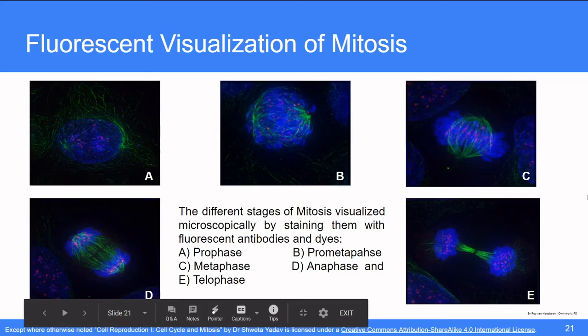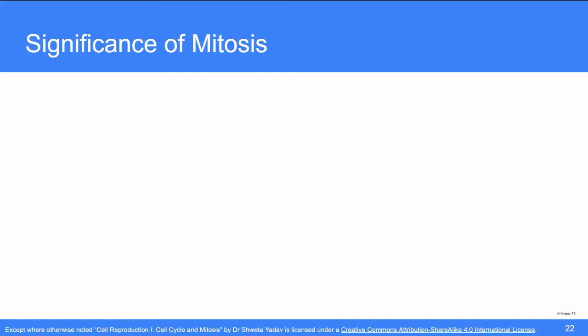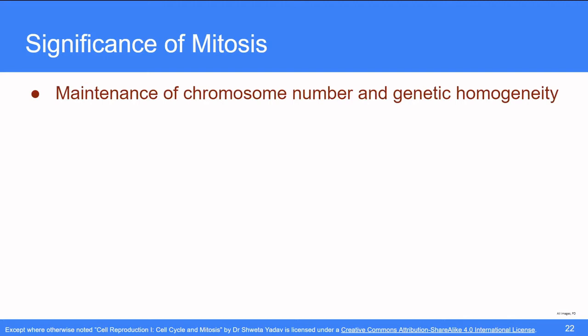We have seen that the mitosis is an elaborate energy consuming process. Then, one may ask, why do cells undergo division instead of putting all that energy into other cellular processes? What is the significance of mitosis? Mitosis is one of the most important processes in the living world. It maintains the chromosome number and genetic homogeneity of a species by producing exact identical copies of the cells and maintaining the same number of chromosomes in a species. Mitosis also helps in development and growth.